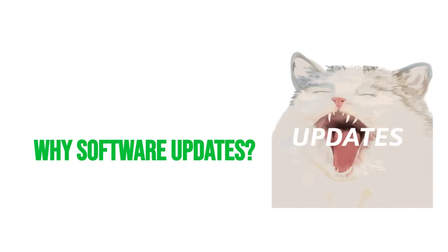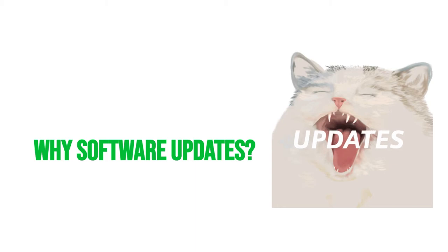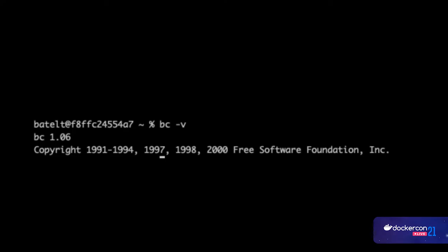Before we start, let's ask ourselves: why do we need software updates at all? There is some software that shouldn't be updated. BC is a command-line calculator and it wasn't updated for 20 years — because the terminal didn't change for 20 years and the math rules didn't change either, so there's nothing to update in that case.